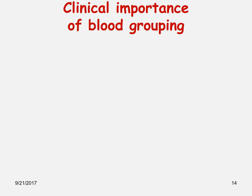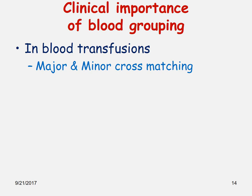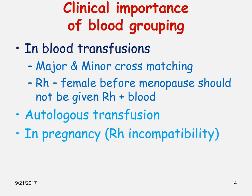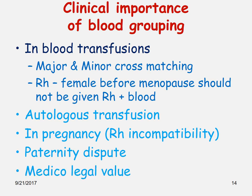The clinical importance of blood groups: in blood transfusions, blood typing is very essential and we have major and minor cross matching. An Rh negative female before menopause should not be given Rh positive blood. There is also autologous transfusion, where blood is taken from the same person and transfused back into the same individual. Blood groups are also important in pregnancy Rh incompatibility, paternity disputes, and medico-legal cases.